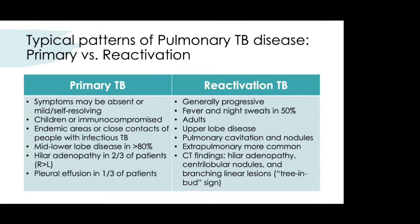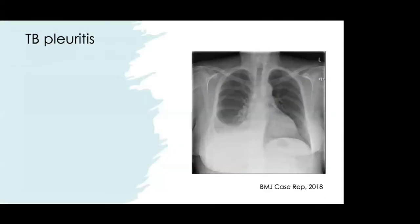Reactivation TB is more common in adults, generally progressive, with fevers and night sweats. This is where you see upper lobe disease — apical involvement — with cavitation and nodules. CT findings may include the tree-in-bud sign, hilar adenopathy, nodules, and pleural effusions from TB pleuritis.